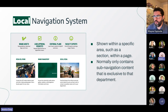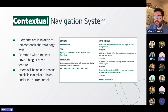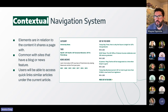Global or site-wide navigation is always present no matter what page you're on — it can be in the header, sidebar, footer, as a sticky menu, or even as a hamburger menu, as shown with USF's default header and mobile view. Local navigation is shown within a specific area, such as a section within a page, containing sub-navigation content exclusive to that department — for example, UCM's brand assets section. Contextual navigation links elements in relation to the content on that same page, commonly seen with blogs or news features showing related articles.